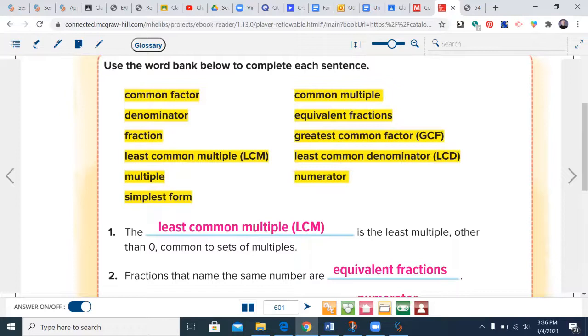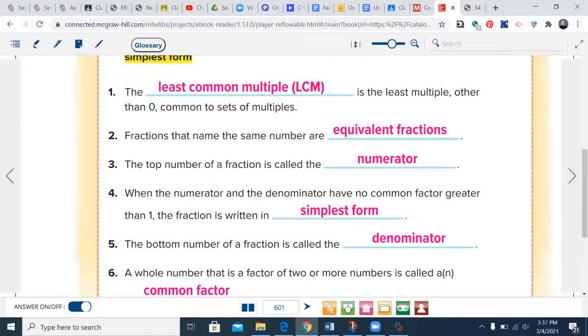The least common multiple is the least multiple other than zero common to a set of multiples. Fractions that name the same number are equivalent—equivalent sounds like equal and means equal fractions. The top number of a fraction is called the numerator. When the numerator and denominator have no common factor greater than one, the fraction is written in simplest form.